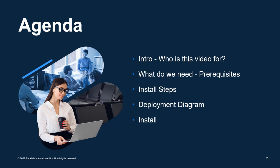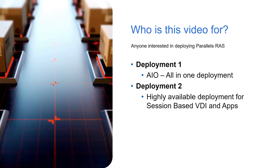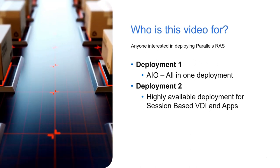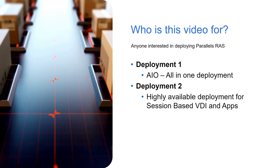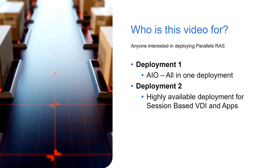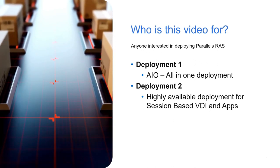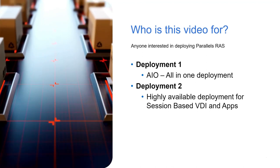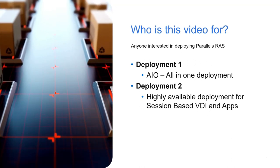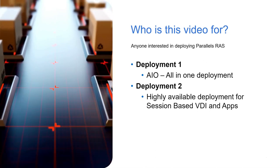This video is for anyone interested in deploying Parallels RAS. We're going to do two types of deployment. Deployment one is what we call an all-in-one (AOI) — all the roles we need on one server — which can quickly get us up and running. We'll have the secure gateway, connection broker, and we'll enable the Microsoft RDS role with various components on there as well.